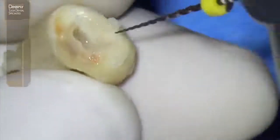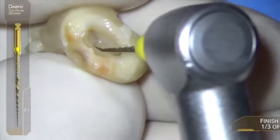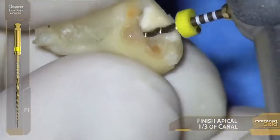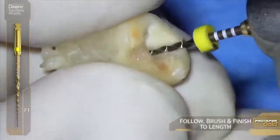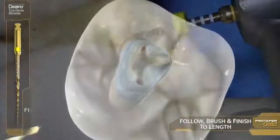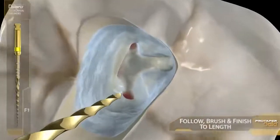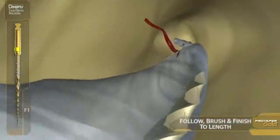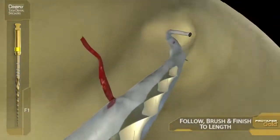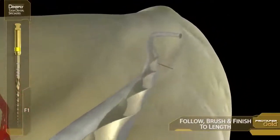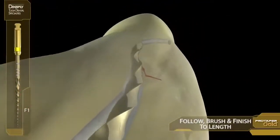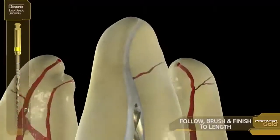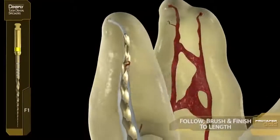Finisher F1 — yellow. The watchwords here are the reverse of the shapers. Finishers are follow and brush, follow and brush. In animation, this is literally what happens with ProTaper Gold — they want to crawl around smooth glide paths. It's a very confident and freeing feeling.